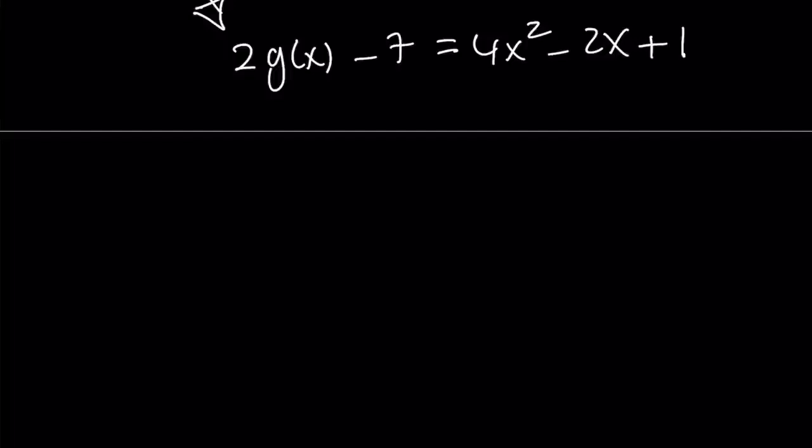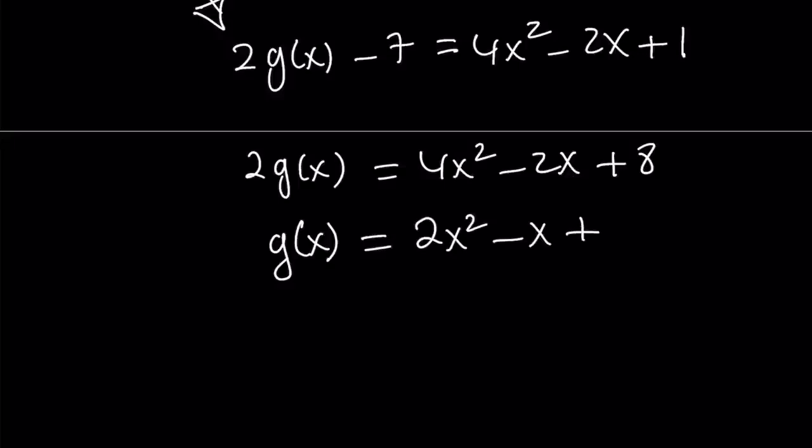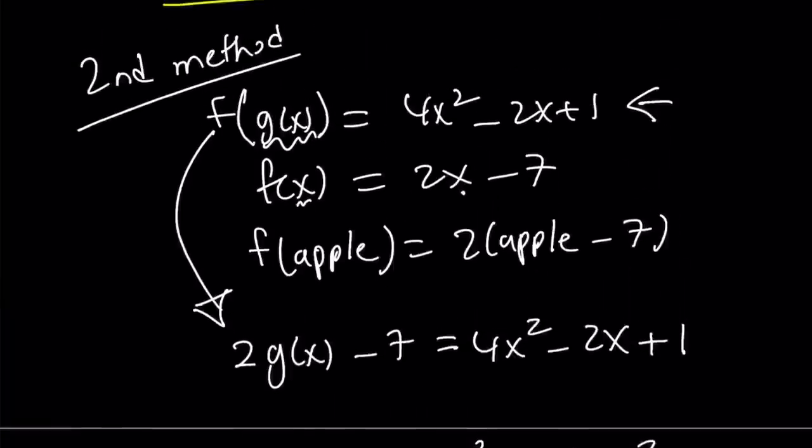Let's go ahead and add 7 to both sides, and we get that, and we can divide both sides by 2. And we're going to be getting g(x) equals 2x squared minus x plus 4.